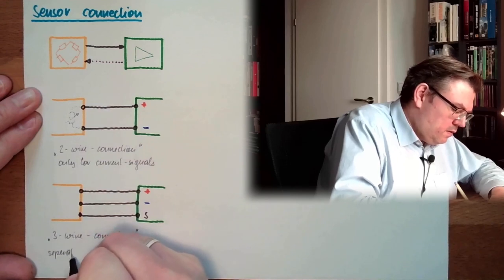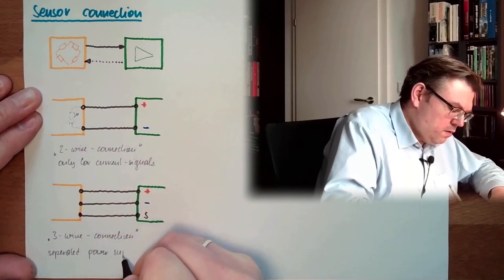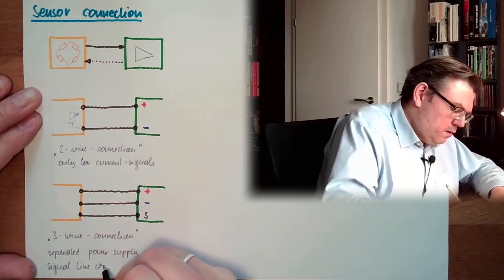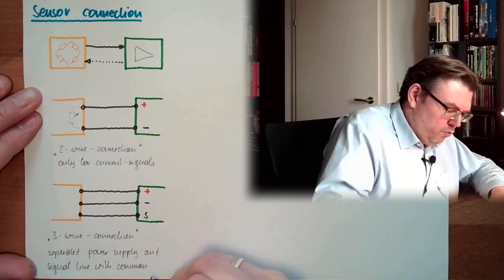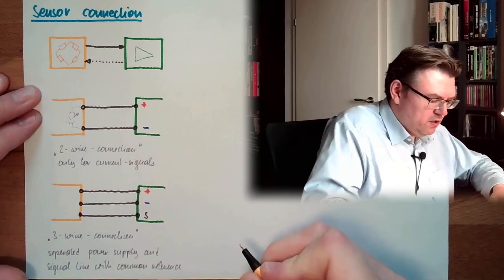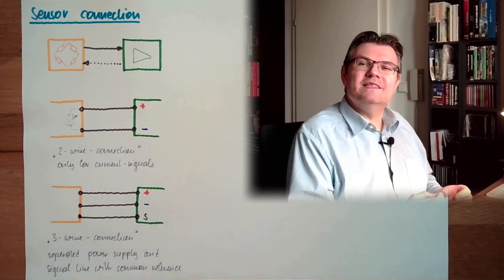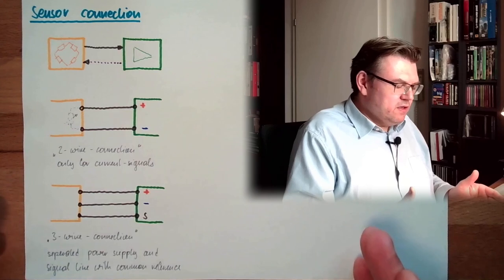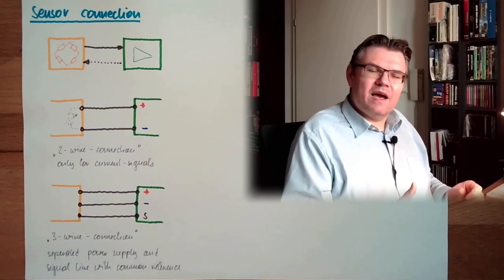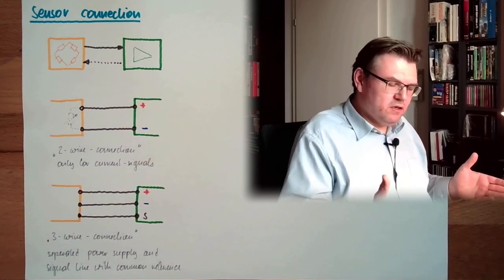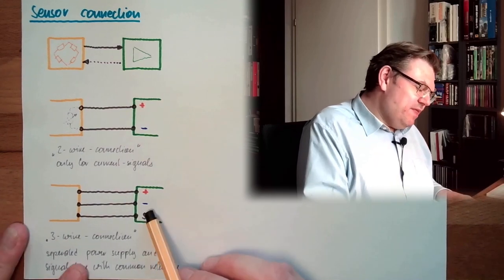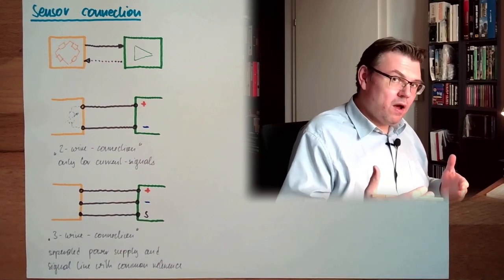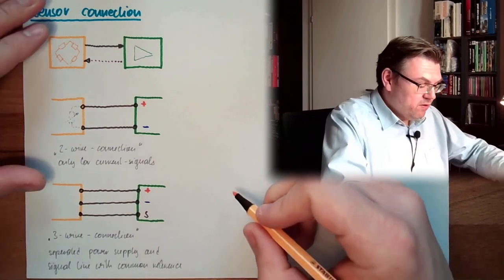Here we have separated power supply and signal line with common reference. So zero volt, minus is for both the same. This might be, here I can do current signals, I can do voltage signals, I can do bipolar signals, every signal I can imagine. And if this is disturbing here, because maybe you need some separation between the signal ground and the power supply ground, then you could use four-wire connection.